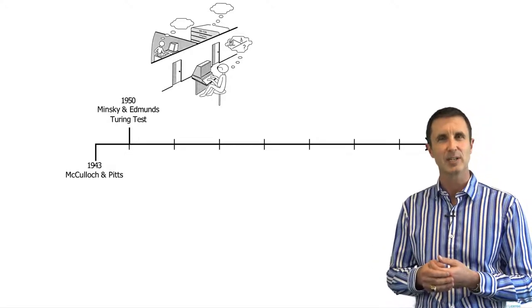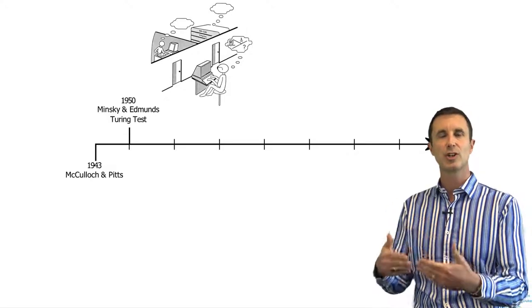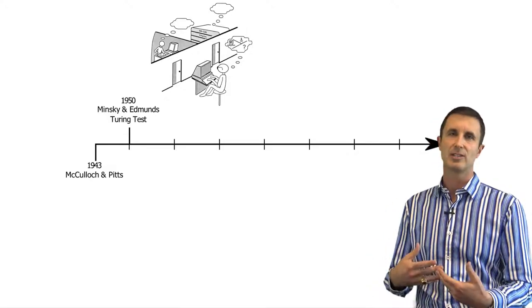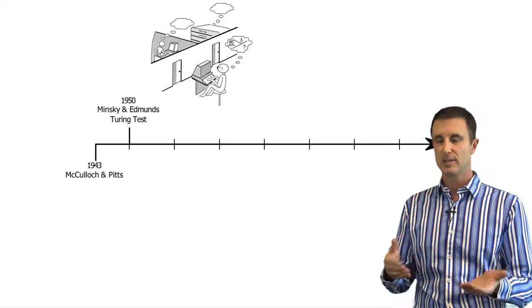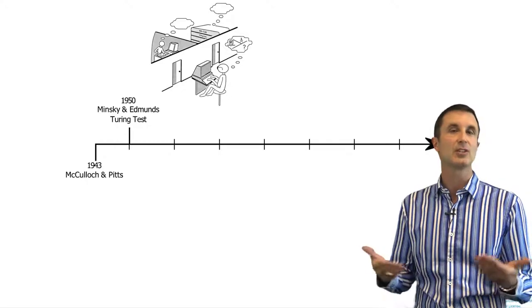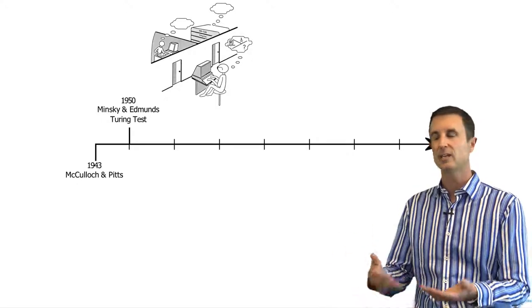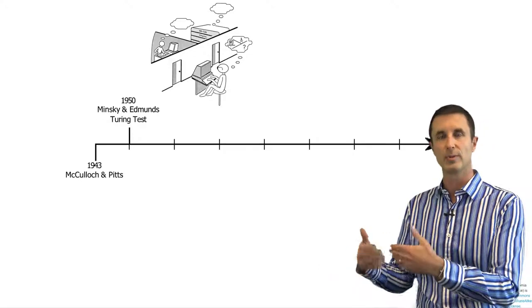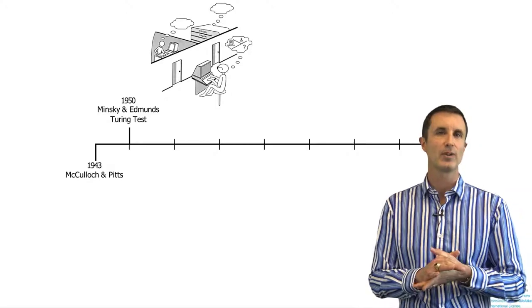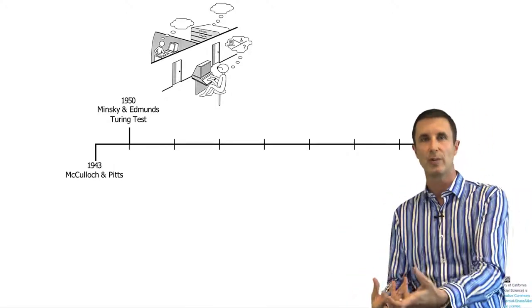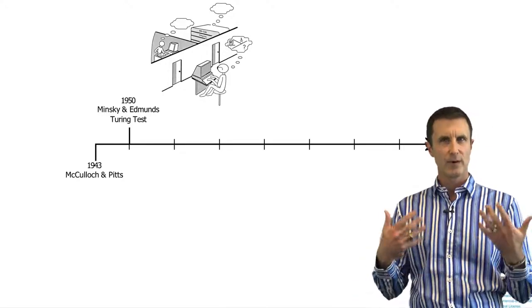Think about this as an online chat situation. The test administrator is attempting to determine, through asking questions and analyzing the responses, whether or not the item on the other side is either a human or not. And if it can't, basically, if it has to guess at random, so 50% of the time it gets it right, 50% of the time it gets it wrong, then the machine, which was sitting on the other side, is considered to have passed the Turing test.